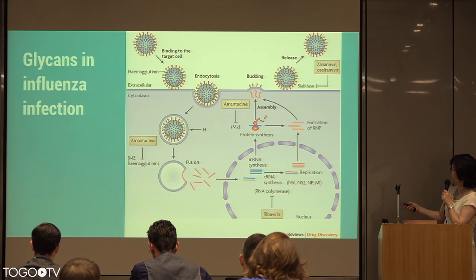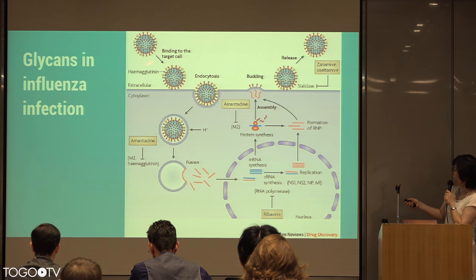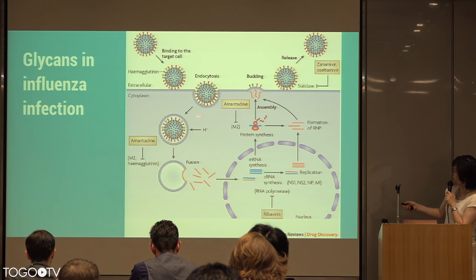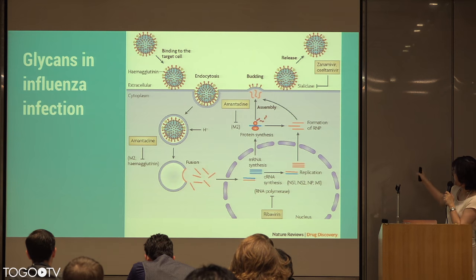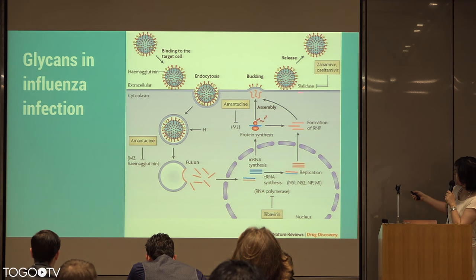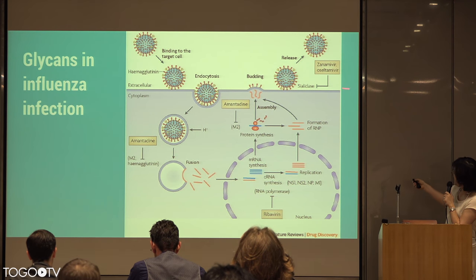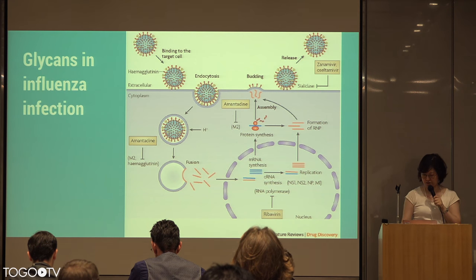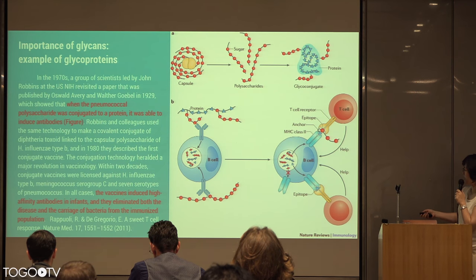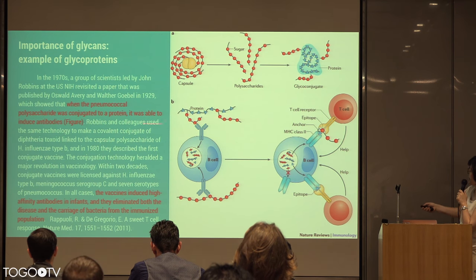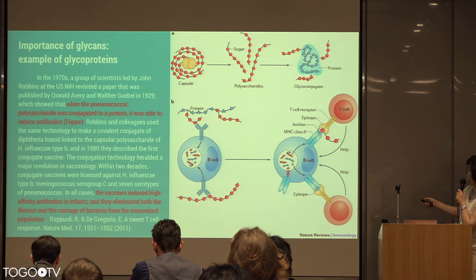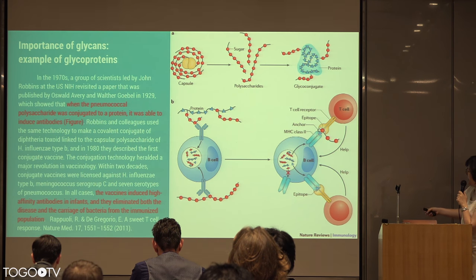As an example, in influenza infection, they know that these glycans are really crucial in the infection and the propagation of influenza. The glycans on the proteins are used to get inside the cell, and then after replication, the sialic acid is cut off so that it can release and continue on to infect other cells. That's why sialidase is inhibited by different influenza drugs to prevent this infection from spreading. We also know that glycoproteins are important in vaccination. It's known that polysaccharides, when conjugated to a protein, are able to induce antibodies.